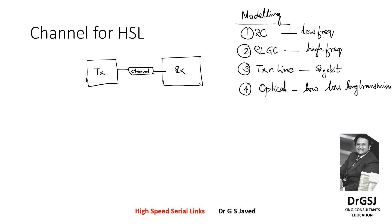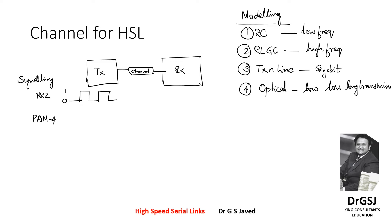These are the four methods that you would typically use. Now, how does the channel play a role in data transmission? The data coming out at the transmitter output is digital or digital-like in nature. The aim is to transfer either zero or one signal levels, which is called non-return-to-zero signaling, or pulse amplitude modulation where you are trying to transmit more than two levels.